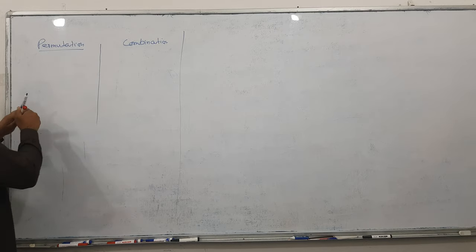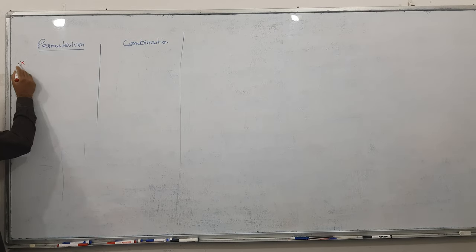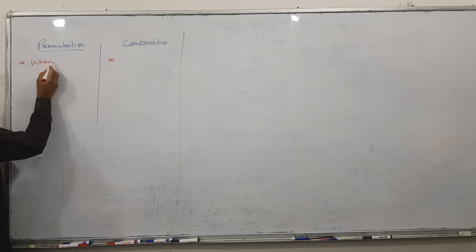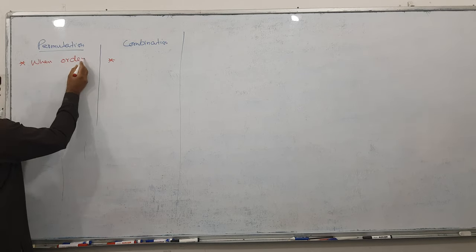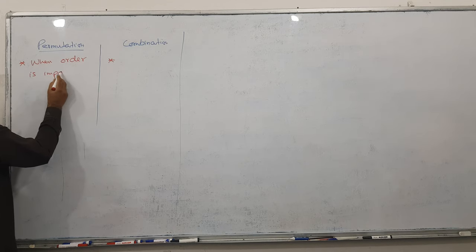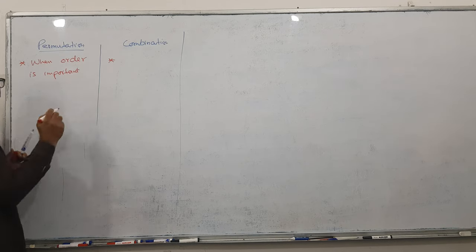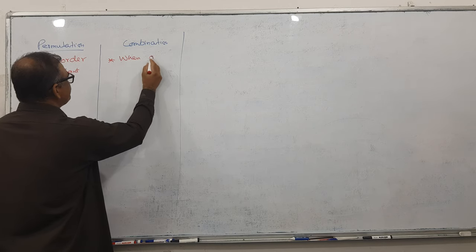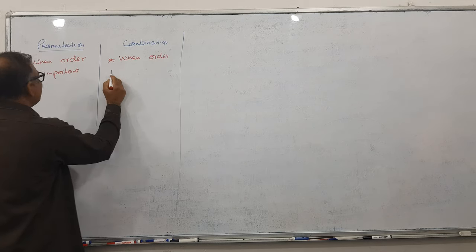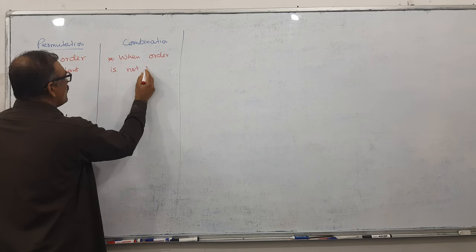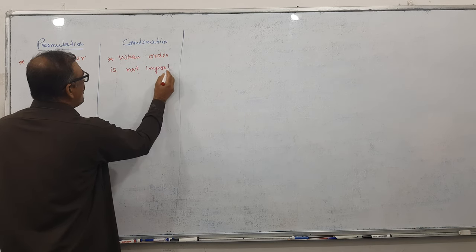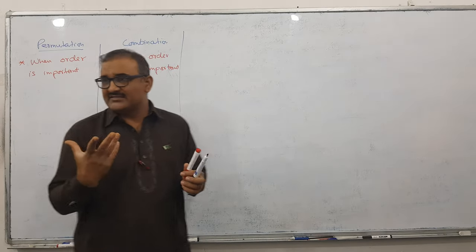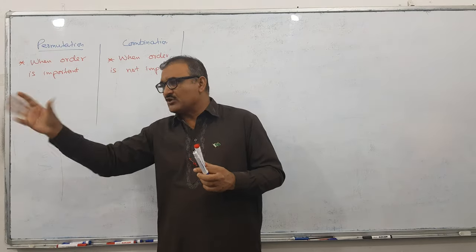And I have a one-line answer - this is the important thing. When order is important, we go for permutation. And when order is not important, we go for combination. So let's talk about what 'order' means. If you understand the concept of order, it will become easy.